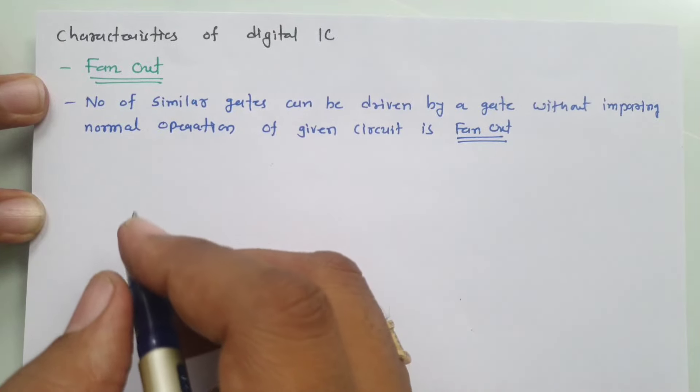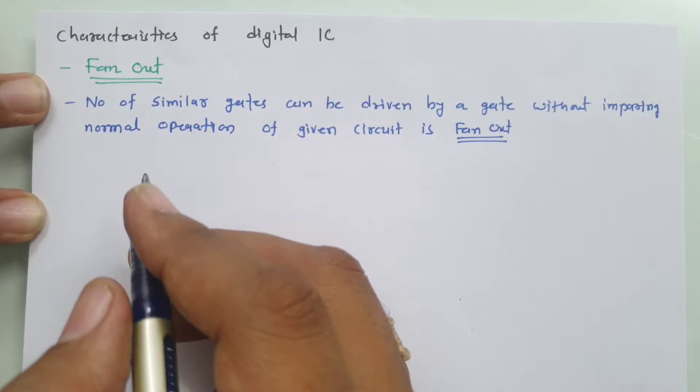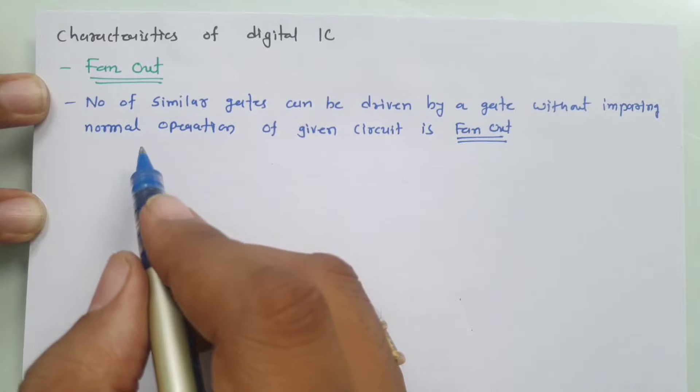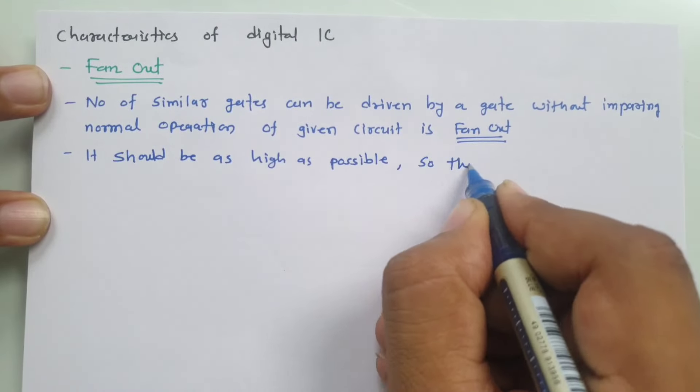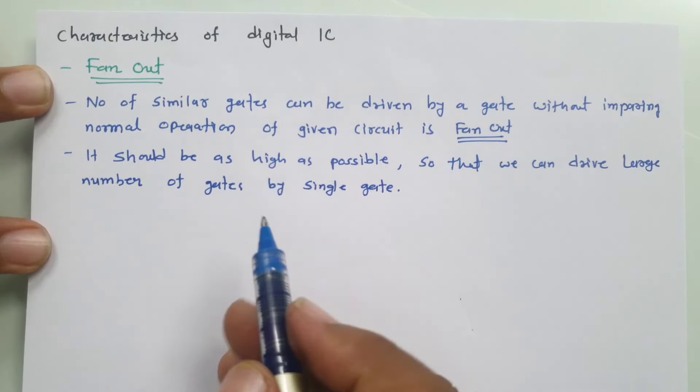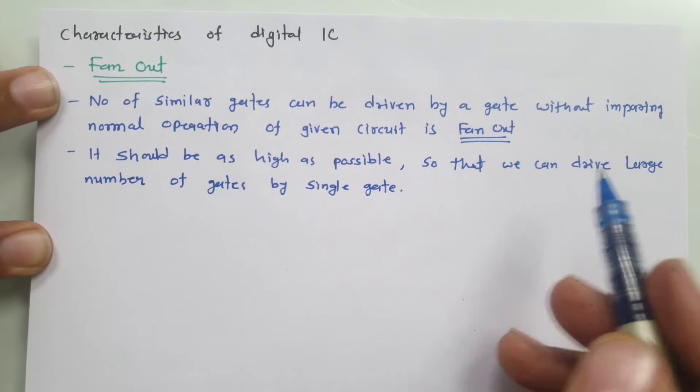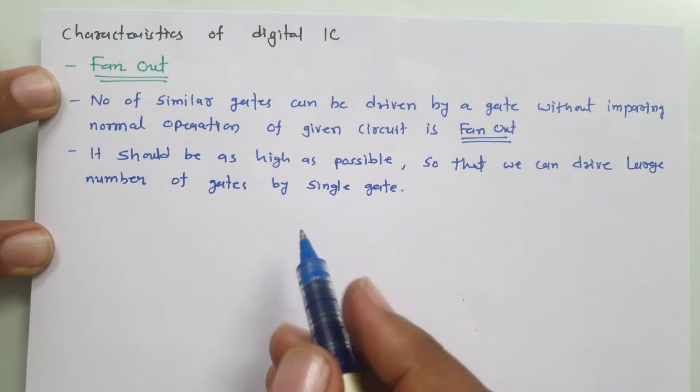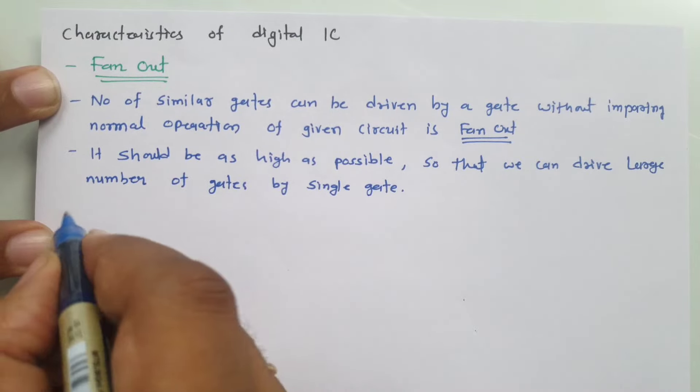Fan-out should be as high as possible, and that is based on amount of current provided at the output of given logical gate. So it should be as high as possible so that we can drive large number of gates by single gate. It also defines amount of current supply by logical gates.